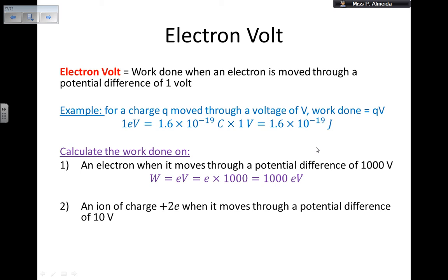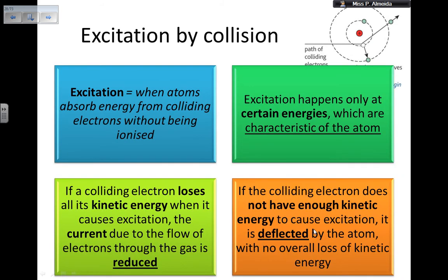Example two: calculate the work done on an ion of charge 2e when it moves through a potential difference of 10 volts. Work equals charge × voltage, so 2e × 10 volts = 20 electron volts. To convert to joules, multiply by 1.6 × 10⁻¹⁹.